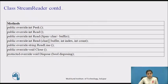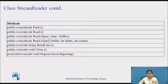The next method is the ReadLine method. It reads a line of characters from the current stream and returns the data as a string. The Close method closes the StreamReader object and the underlying stream, releasing any system resources associated with the reader. The Dispose method closes the underlying stream and releases the unmanaged resources used by the StreamReader, and optionally releases managed resources.